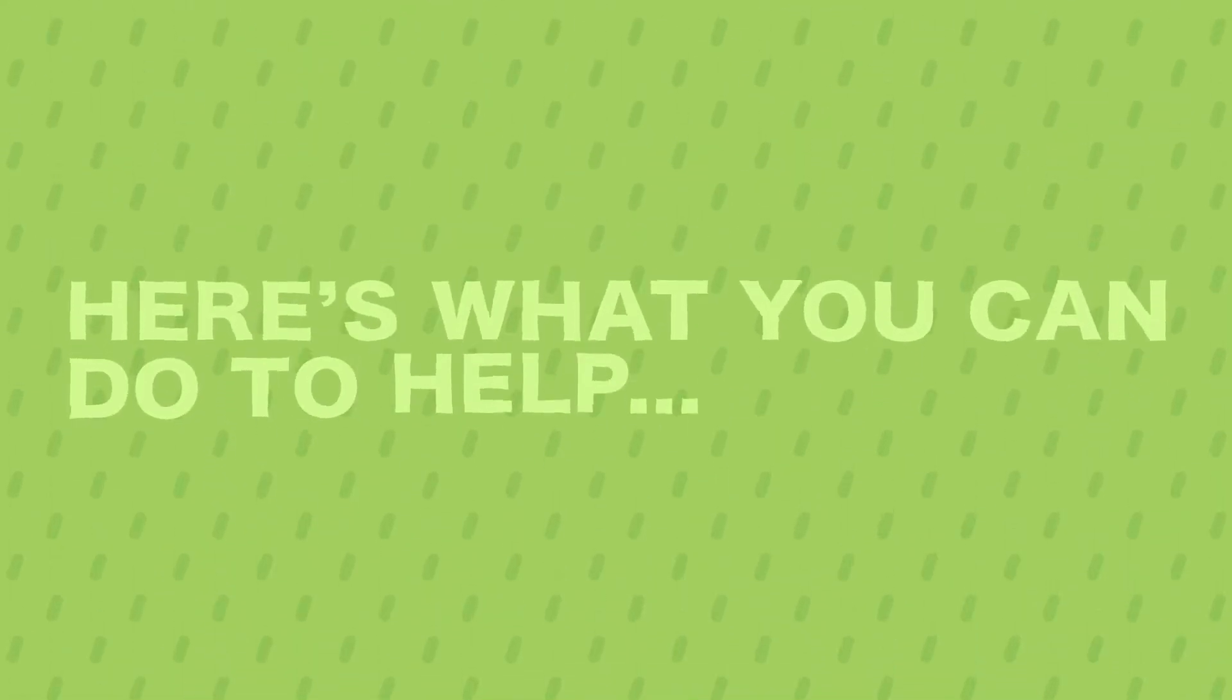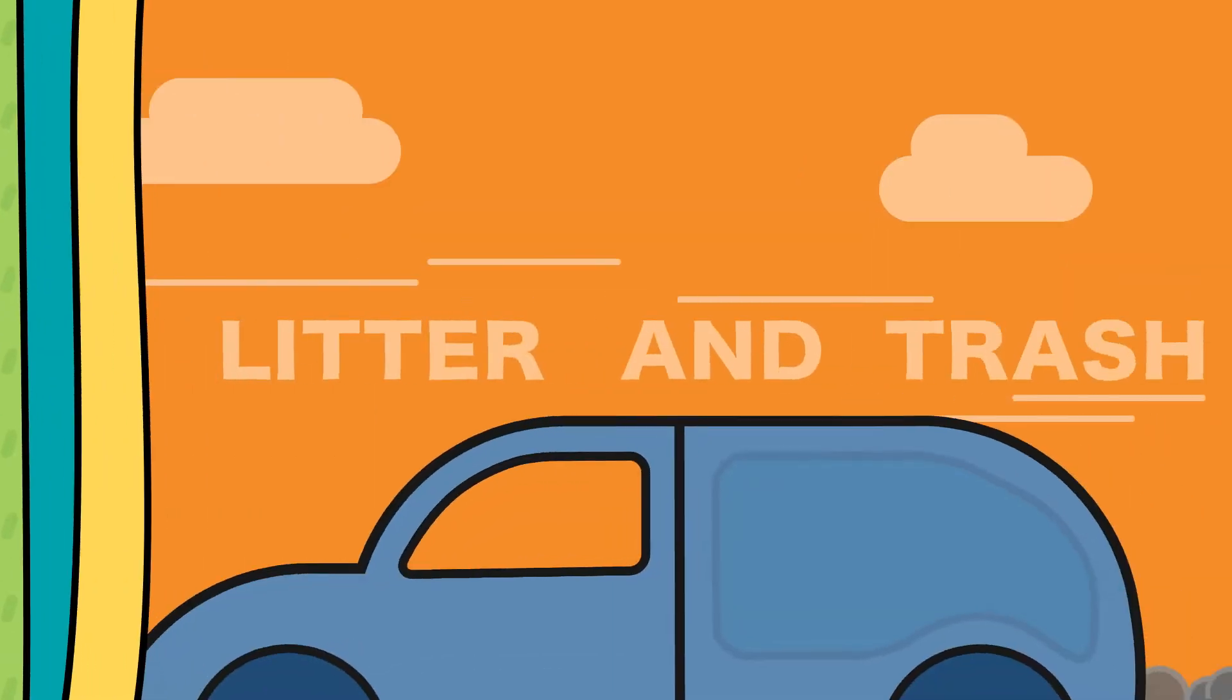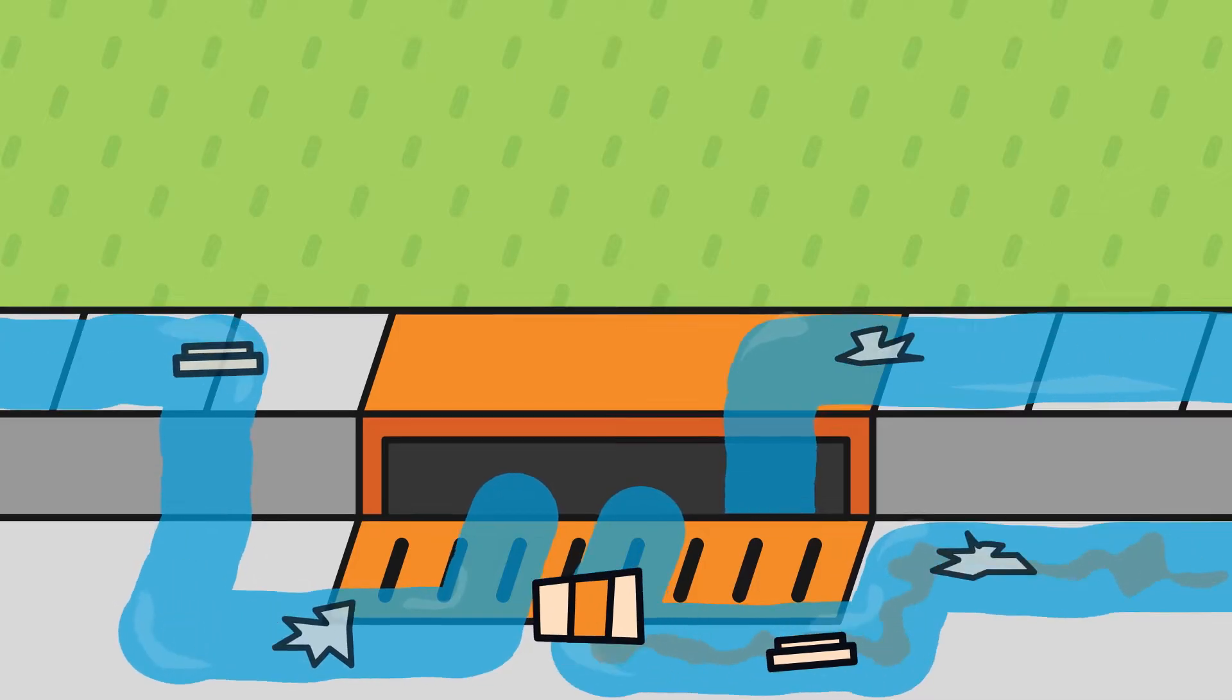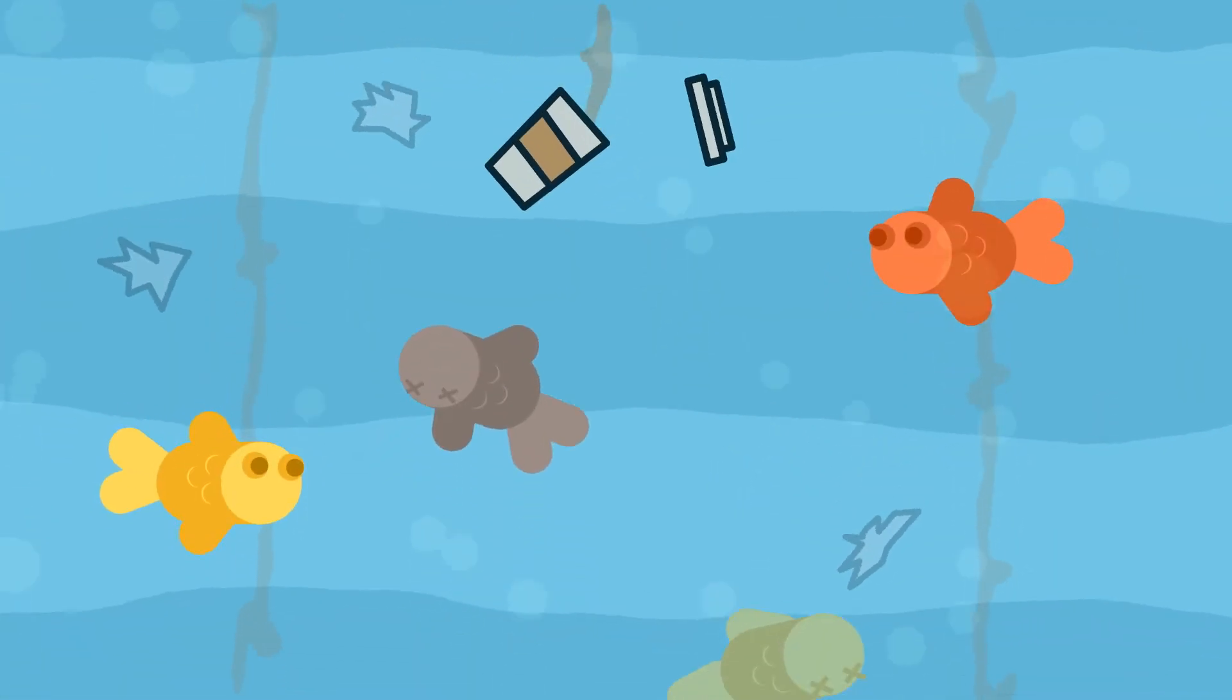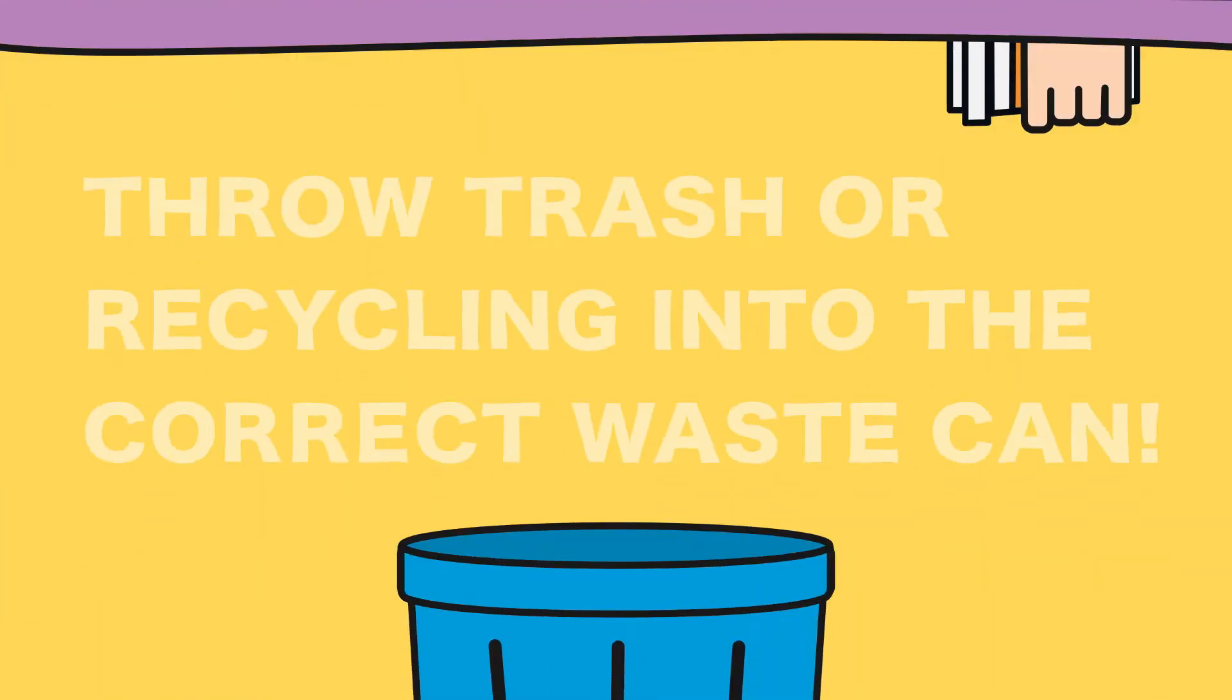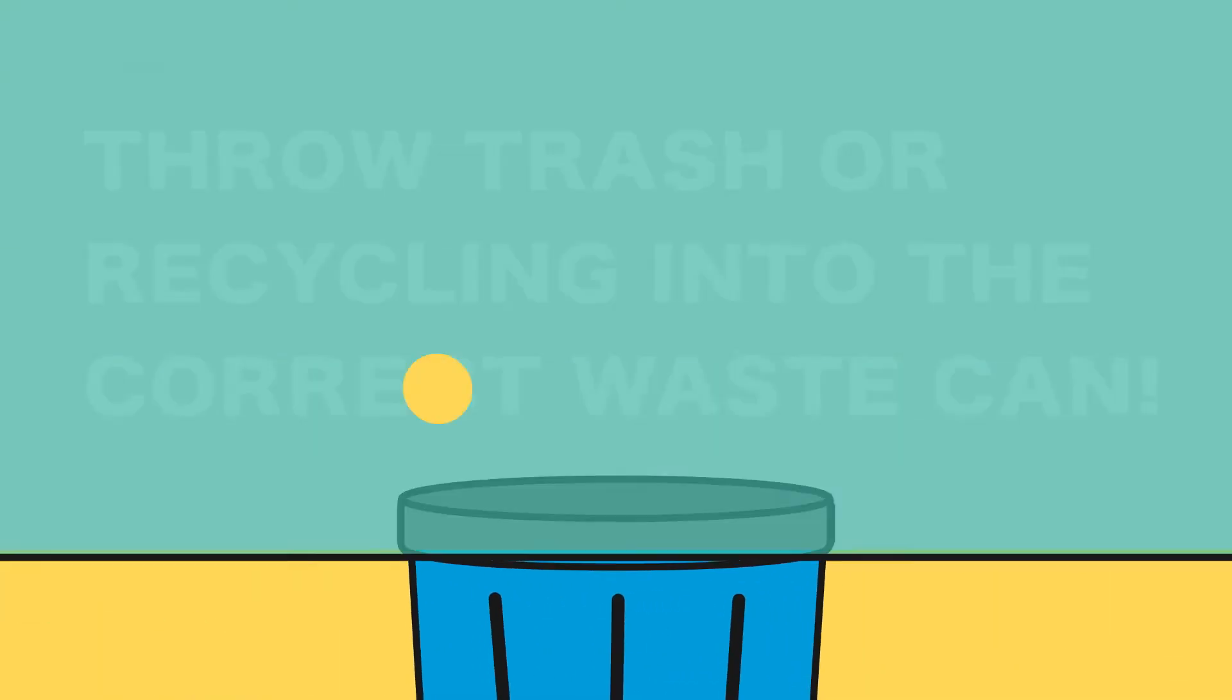Here are some things we can all do to stop stormwater pollution. Litter and trash that aren't disposed of properly can injure, choke, or kill ducks, fish, turtles, and other animals, and make our environment look bad. Always throw your trash or recycling into the correct waste can.